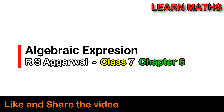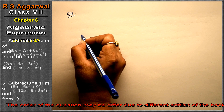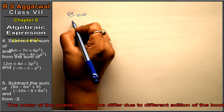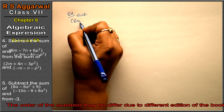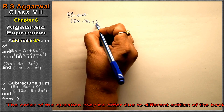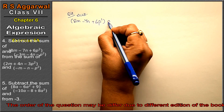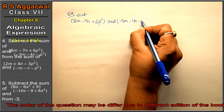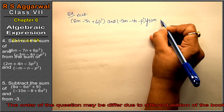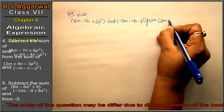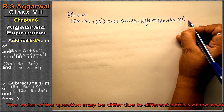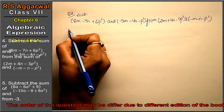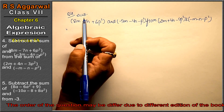Let's do question number 4 of exercise 6a, algebraic expressions. Question 4 says: subtract the sum of 8m minus 7n plus 6p² and minus 3m minus 4n minus p² from the sum of 2m plus 4n minus 3p² and minus m minus n minus p². Let's read the question once more carefully — we have to subtract the sum of these two from the sum of those two.